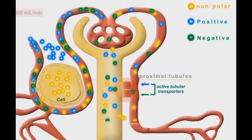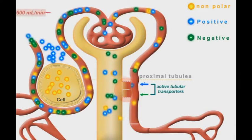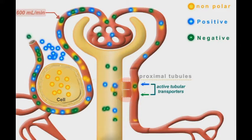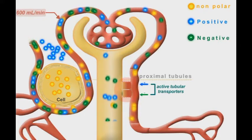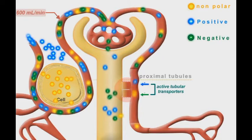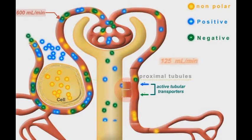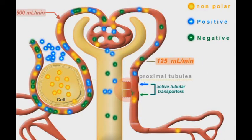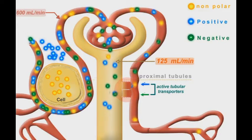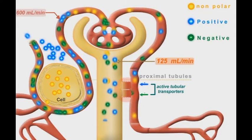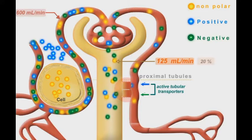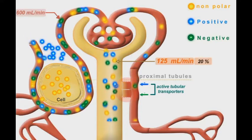Actually, the renal plasma flow through afferent arterioles is around 600 mL per minute. However, only 125 mL per minute can be filtrated by the glomeruli in the Bowman's capsules. This constitutes only 20% of the total plasma flow.